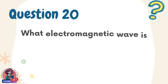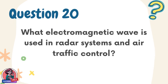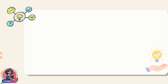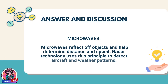Question 20. What electromagnetic wave is used in radar systems and air traffic control? Answer: microwaves. Microwaves reflect off objects and help determine distance and speed. Radar technology uses this principle to detect aircraft and weather patterns.